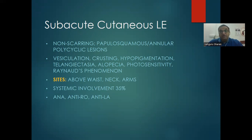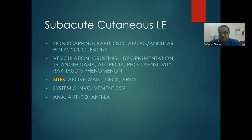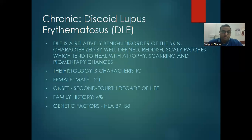Systemic involvement in subacute cutaneous LE is 35 percent. Diagnosis involves a battery of blood tests. First, antinuclear antibody (ANA) — not specific, but when positive, you proceed to the ANA profile. The specific antibodies are anti-Ro and anti-La. The mnemonic 'RoLa' is for subacute cutaneous LE after ANA has been positive.